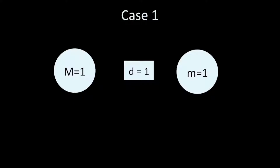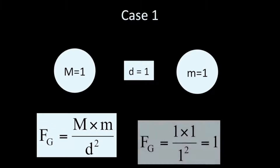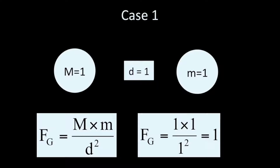Let's try case number one. I've got two masses — mass one and mass one — and the distance between them is also one. Using Newton's form of the gravitational force, I get one times one on top, divided by one squared. That's just one over one, which is one.